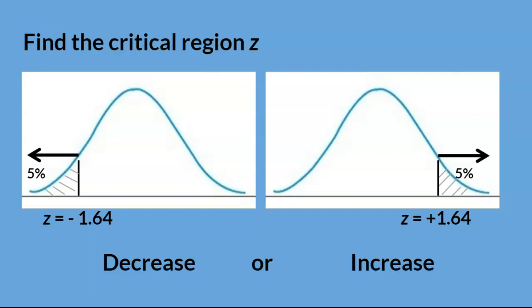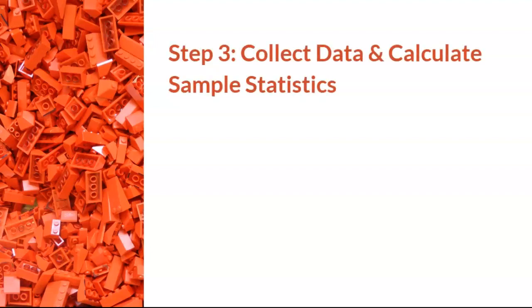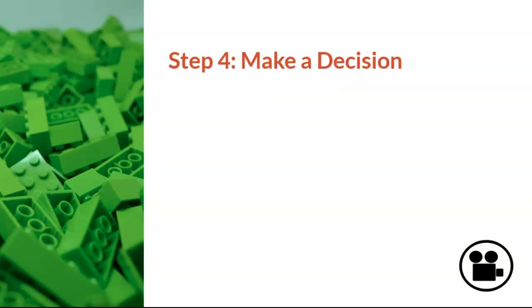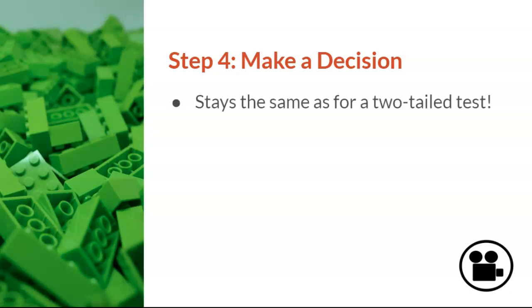I encourage you to pause the video and look this up yourself in the normal curve table. Step three, the red Lego, is to collect data and calculate sample statistics. This step stays the same as it would for a two-tailed test. You will calculate the z-score for the sample using the formula provided in the video for a two-tailed hypothesis test. Step four, the green Lego, is making a decision about whether the study worked or not. This step also stays the same as it would for a two-tailed hypothesis test.